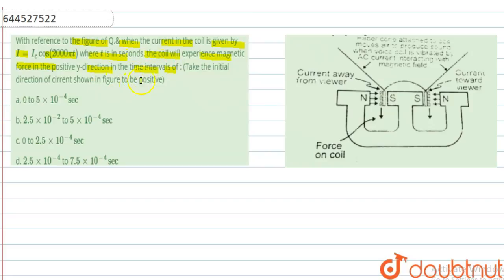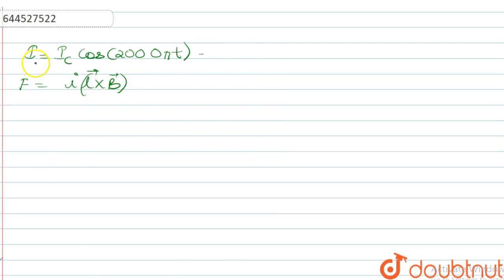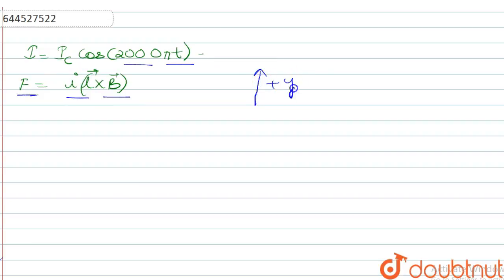The current equation is given as i = i_c cos(2000πt). The force is given by F = iL × B. We know that the force will be along the positive y direction when the current in the circuit is negative. So the current value will be negative when cos(2000πt) becomes negative.